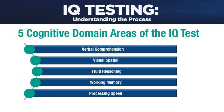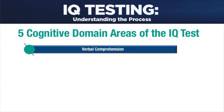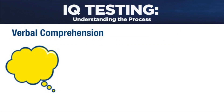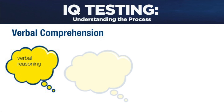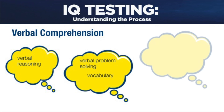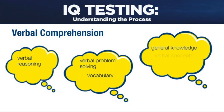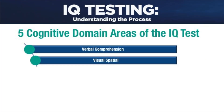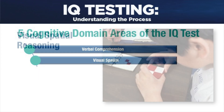Now I'll explain each domain area that makes up the IQ test. The first domain area is verbal comprehension. Verbal comprehension looks at a student's ability to share their knowledge when asked a series of language-loaded questions. The student must utilize their verbal reasoning and verbal problem-solving skills. Vocabulary, general knowledge, higher-order verbal concepts, and social reasoning are all assessed in the verbal comprehension domain.